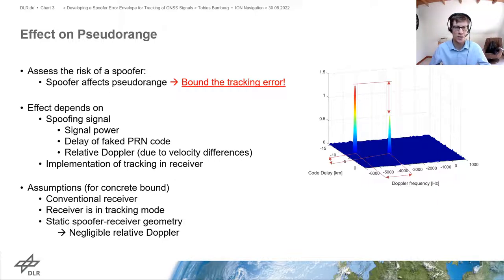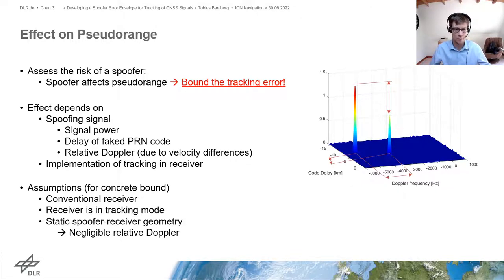Our receiver is in tracking mode, meaning that before the spoofing signal is switched on, we track the authentic satellite signals. And last but not least, we are using a static spoof-receiver geometry in order to neglect the relative Doppler.